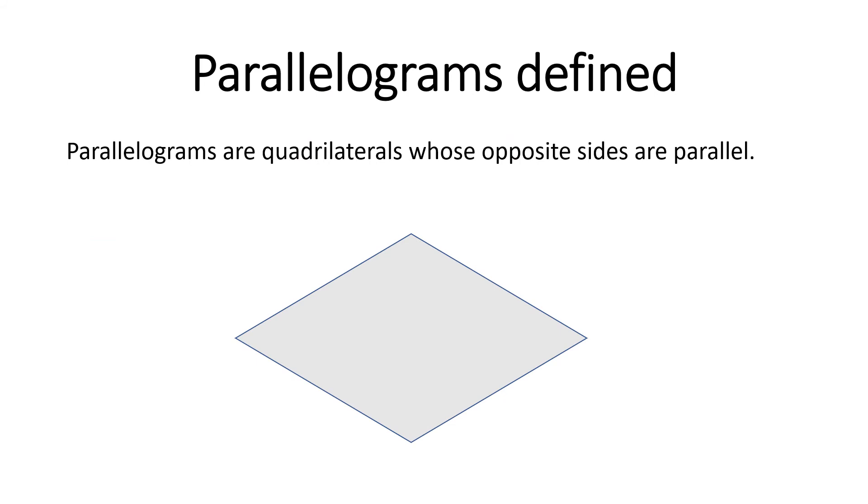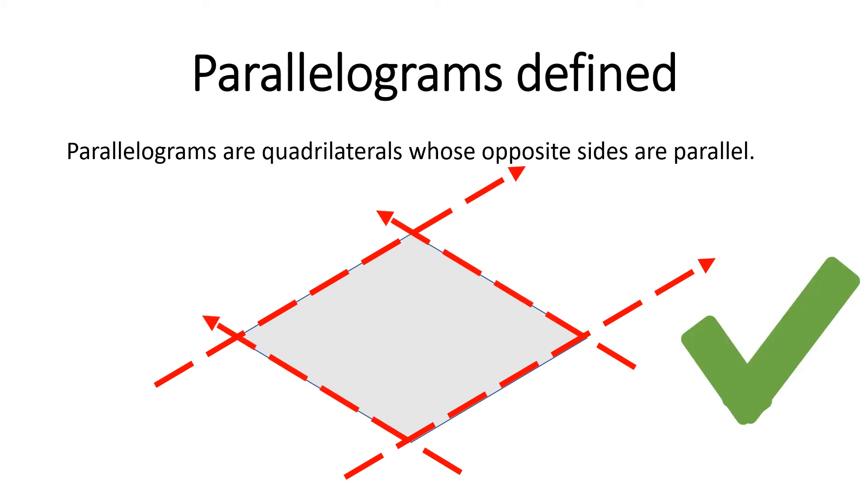Here we have a shape, kind of like a diamond or rhombus. And it has four sides, so it's a quadrilateral. And if we draw imaginary lines, the opposite sides are parallel. So this is a parallelogram.